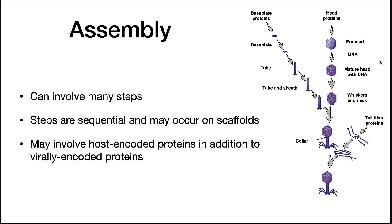Assembly: Once the cell synthesizes viral proteins, they will assemble. Sometimes this assembly is spontaneous; at other times, it is driven by other viral proteins. The steps of assembly are sequential. Shown at right is the assembly of phage T4, a complex virus — each step occurs before the next can begin, eventually resulting in a fully functional virus. This assembly often involves host-encoded proteins in addition to virally-encoded proteins, which support or catalyze the assembly of the virion.